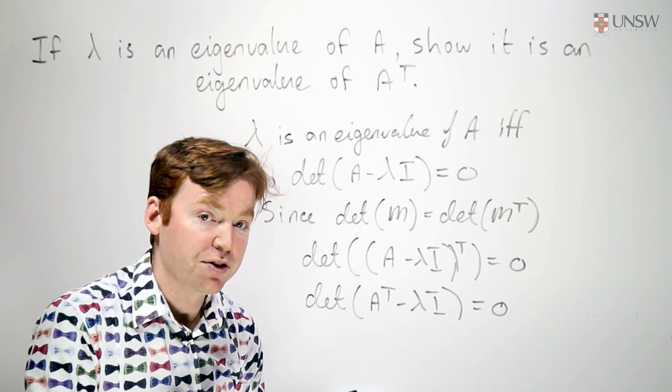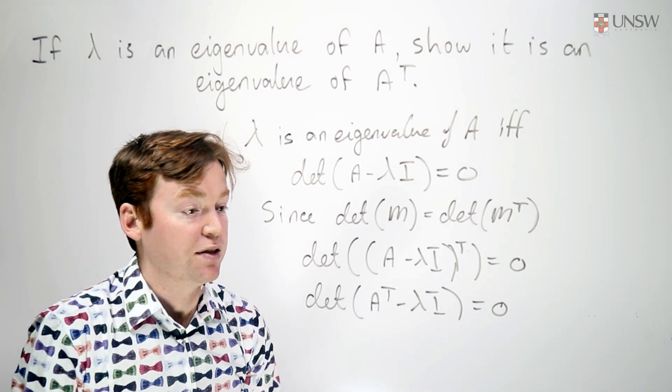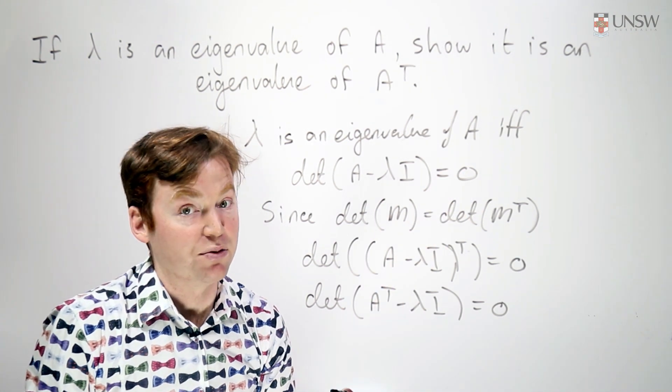And this is the characteristic equation for A transpose, which means that any solution to this is an eigenvalue of A transpose.